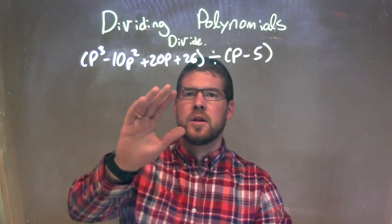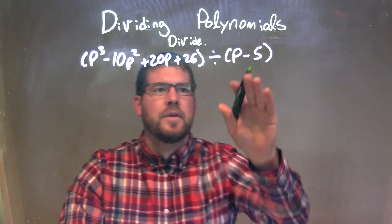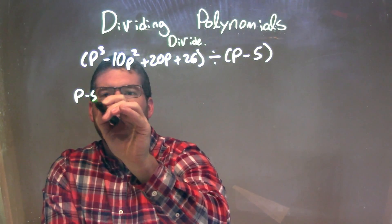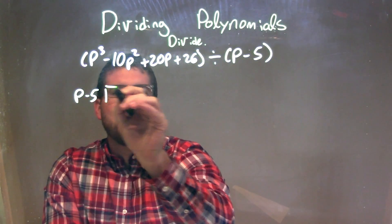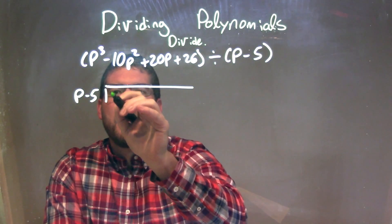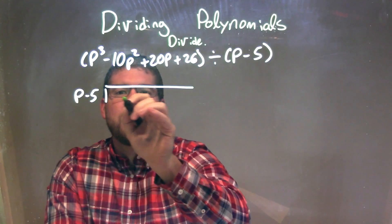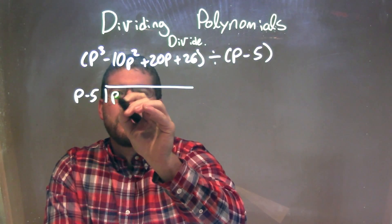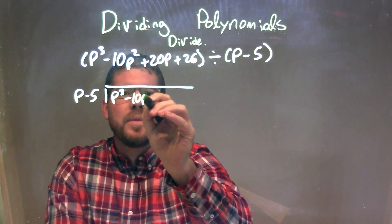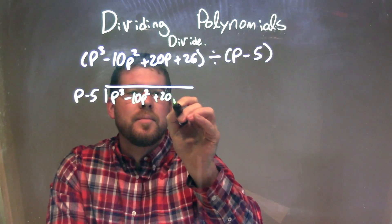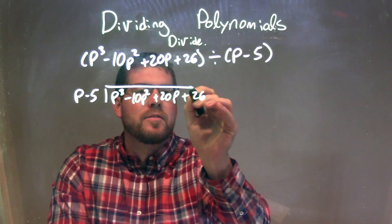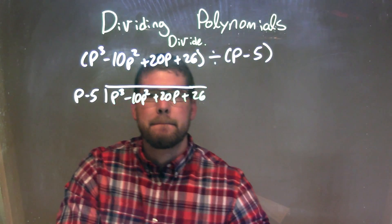I'm going to write this in long division form, so I'm going to take my p minus 5 here, p minus 5, and then we go into my dividend: p to the third minus 10p squared plus 20p plus 26.